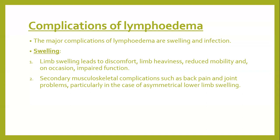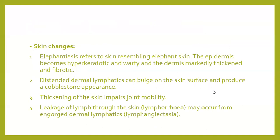Skin changes that occur with lymphedema include elephantiasis, referring to skin resembling elephant skin — the epidermis is hyperkeratotic and warty, and the dermis is thick, indurated, and fibrotic. Distended dermal lymphatics can bulge on the skin surface producing a cobblestone appearance. This skin thickening impairs joint mobility. Leakage of lymph through the skin — called lymphorrhea — may occur from engorged dermal lymphatics.